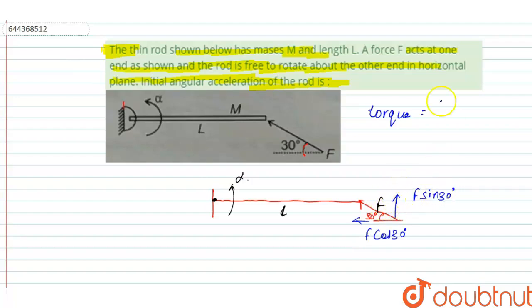And torque is generated due to F sin 30 degrees. That means we can write F sin 30 degrees into r and the value of r is capital L. Then we can write F into L by 2, F sin 30 degrees. This is the value of torque.